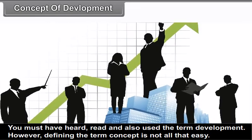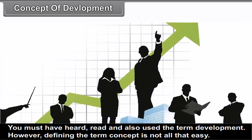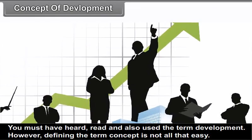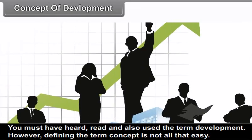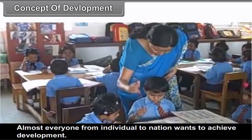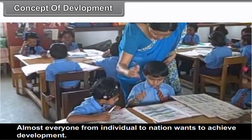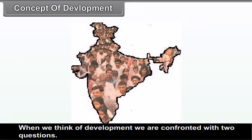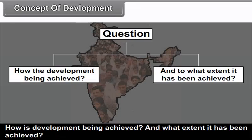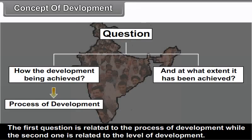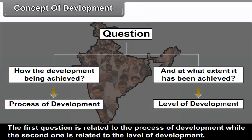The term development is widely heard and used, but defining it is not easy. Almost everyone — from individuals to nations — wants to achieve development. When we think of development, two questions arise: how is development being achieved, and to what extent has it been achieved? The first question is related to the process of development, while the second is related to the level of development.